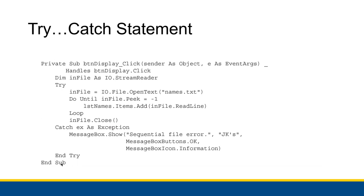If names.txt works and all the ReadLine calls also work, we exit and go to the End Try area and end the sub procedure entirely. However, if there is an exception, we catch it, save it inside our ex variable, and display a message box. In this example the message box just says 'sequential file error' — it doesn't even use the ex variable. The ex variable actually has information about the exception. You can put the error text of the exception inside your message boxes, which is really useful. You want to signal to the user that something bad happened.